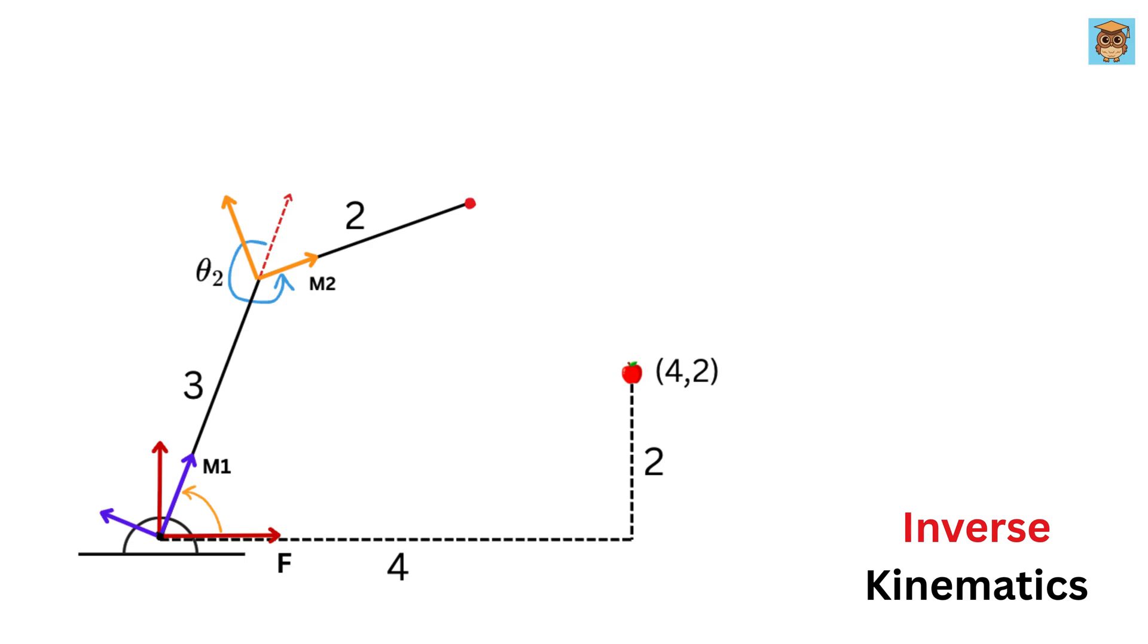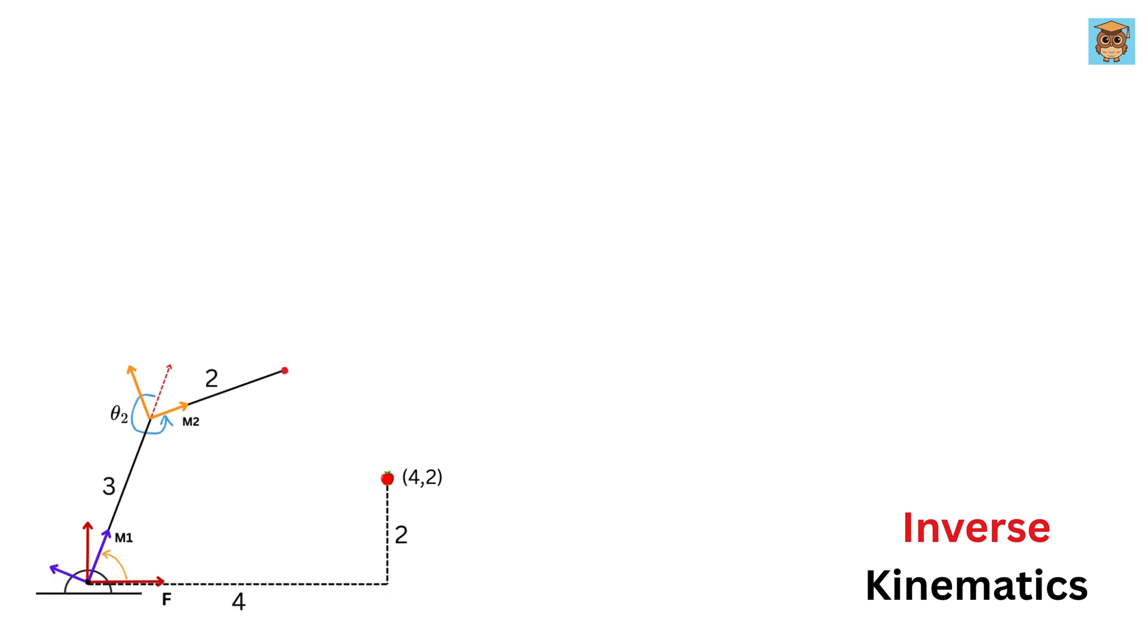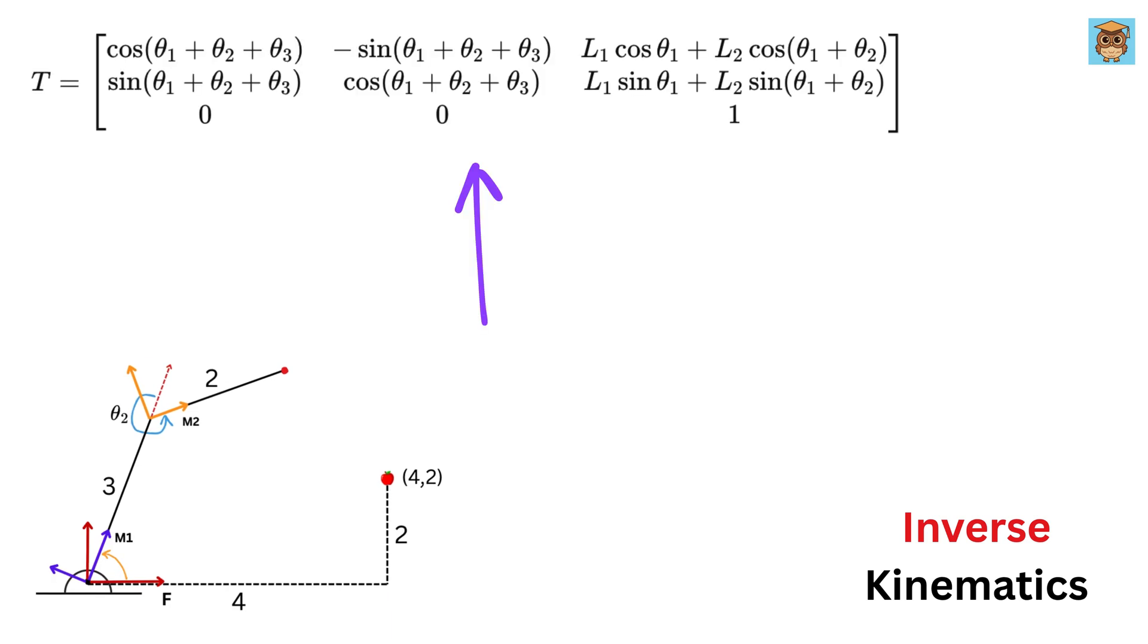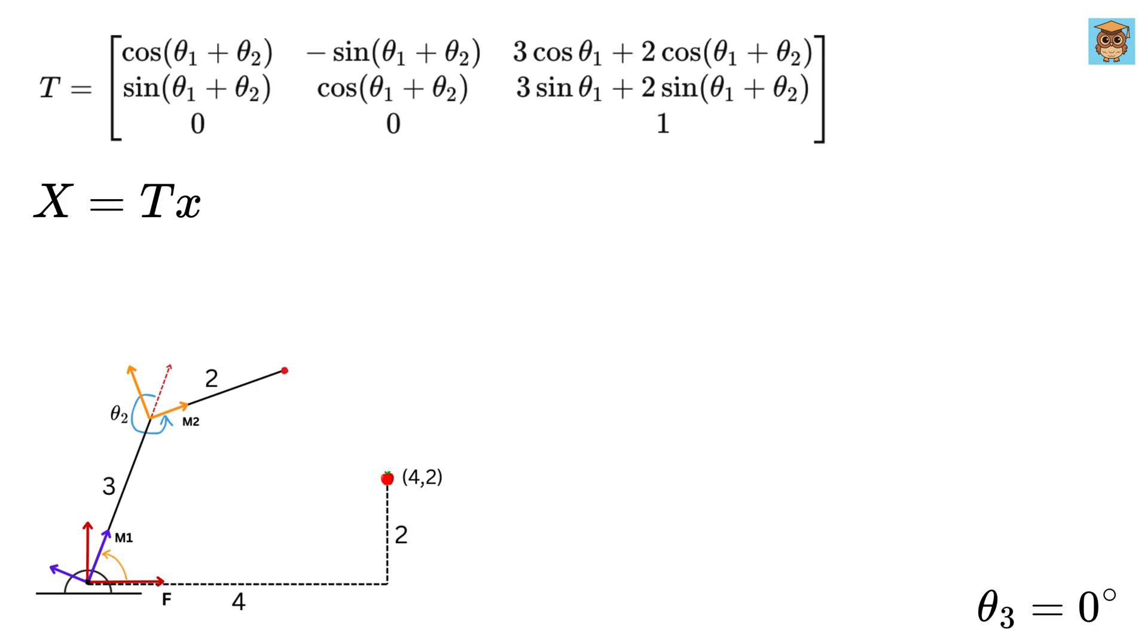Now from the previous video on forward kinematics I have shown you how we end up at this transformation matrix T and big X equals T times small x. For our case we assume theta three to be zero in order to keep things simple and substitute L1 and L2 here to get this. Here small x will be the same as the origin of the end effector or this end point of link two and thus it will be zero zero and one and the big X will be four two and one because the object is at four and two from the robot's base.